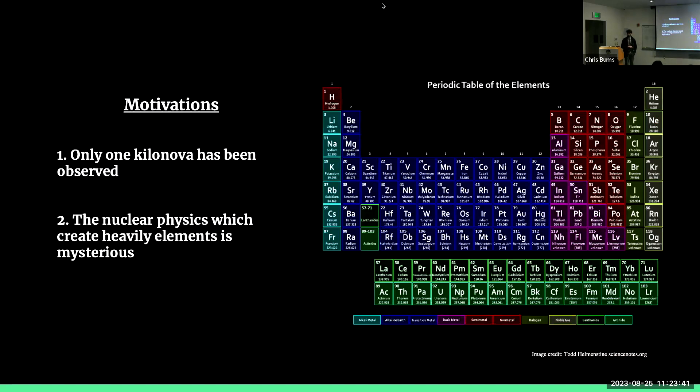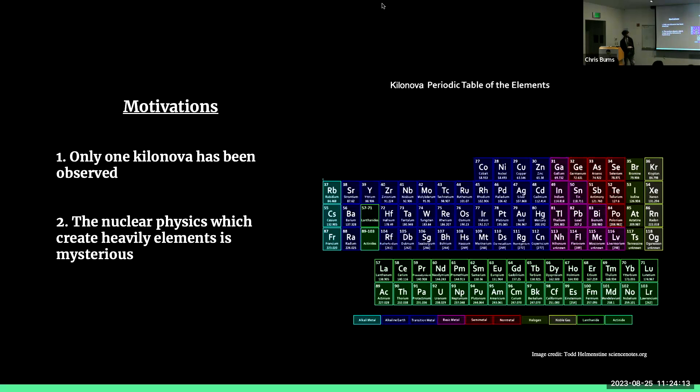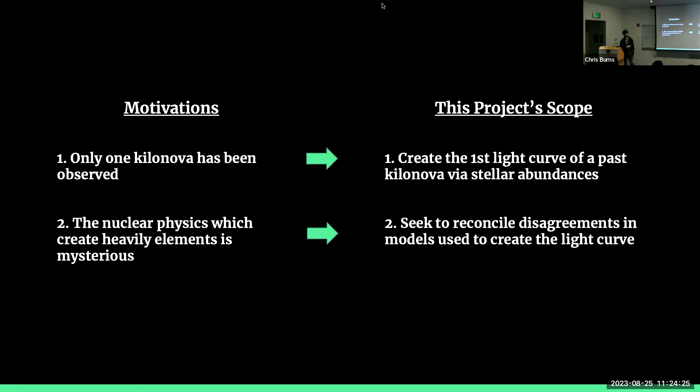We've only observed one Kilanova, maybe two as of very recently. But the population is very small. So it'd be nice to have more to understand the models, understand just what's going on. And then number two is that the nuclear physics which create these heavy elements is very mysterious. And it's really important to understand how these Kilonova decay. The synthesis goes on in the initial conditions because this is a periodic table of elements. This is the periodic table which is made by Kilonova, which is, you might notice, a lot of it.